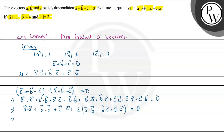We know that a·a = |a|², so this becomes |a|² + |b|² + |c|² + 2μ = 0. Substituting: |a|² = 1² = 1, |b|² = 4² = 16, and |c|² = 2² = 4.